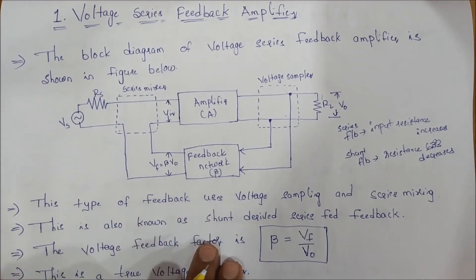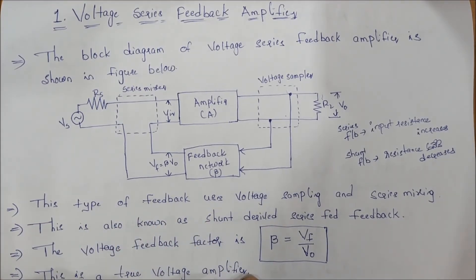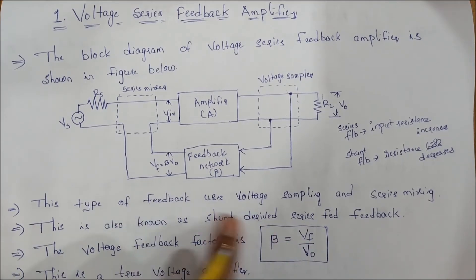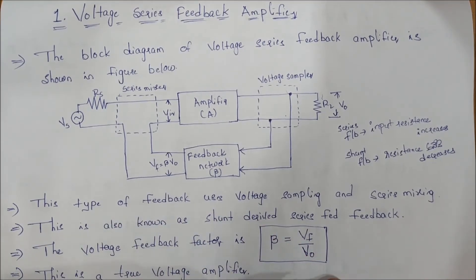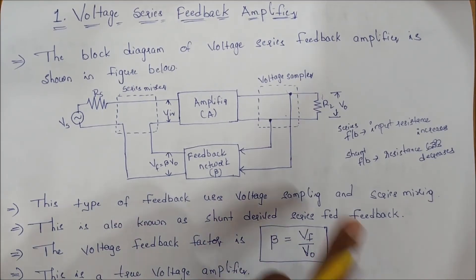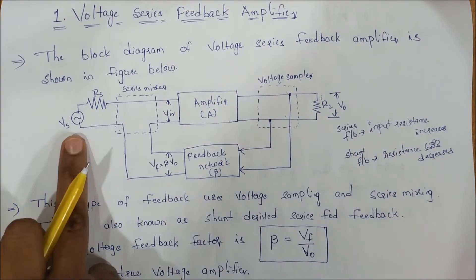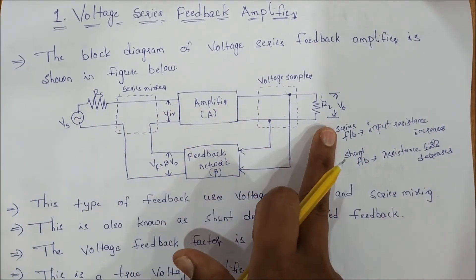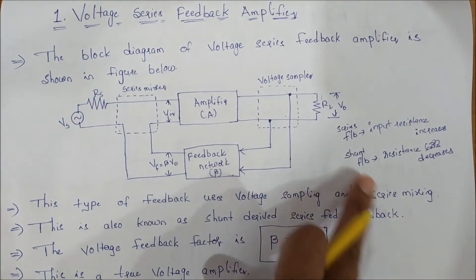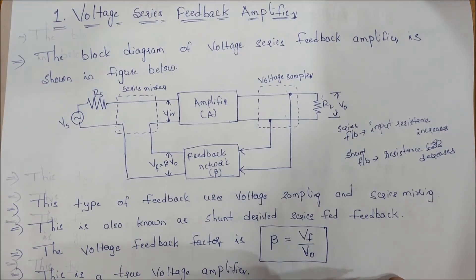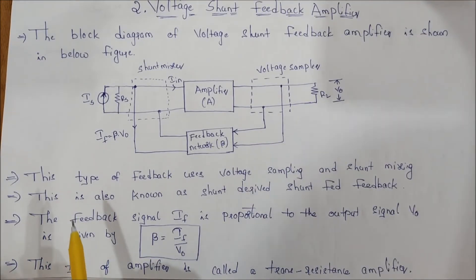This is a voltage amplifier. The feedback factor beta equals vf over v0. This is the explanation about voltage series feedback.